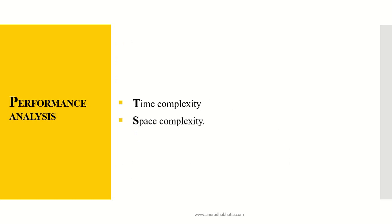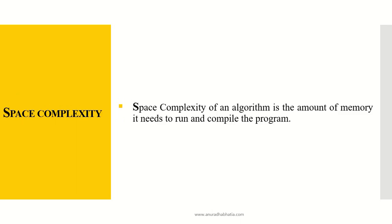Performance analysis can be done on time complexity and space complexity. Time complexity is how much time it takes — for example, how much time it takes to sort particular elements. Space complexity is how much memory it takes. The space complexity of an algorithm is the amount of memory it needs to run and compile the program.